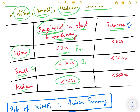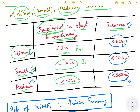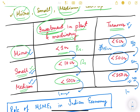Based on turnover: less than 5 crores is micro; less than 50 crore is small scale; less than 250 crore is medium scale; and anything more than 250 crore is large scale. Note that the thresholds are strictly 'less than' — so exactly 5 crore falls into micro, exactly 50 crore into small, and exactly 250 crore or more into large.